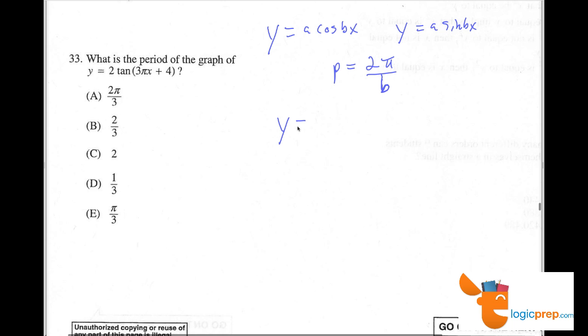Because when we have y equals a tan bx, and this is the rule that you really should know for this problem, the period p equals pi divided by the frequency b.